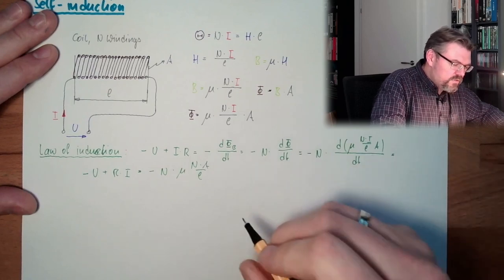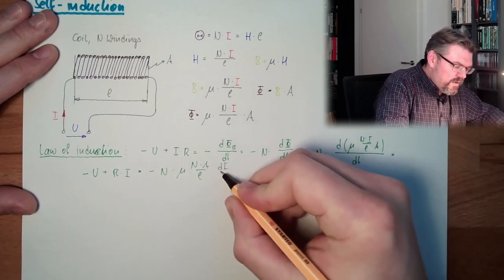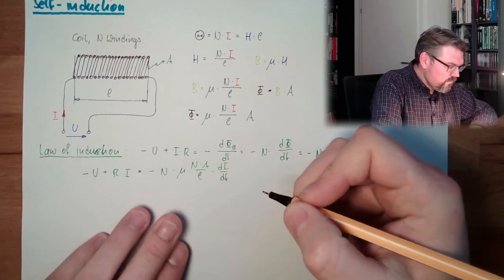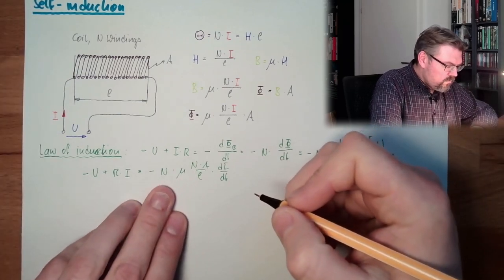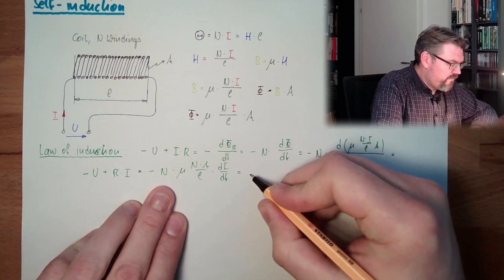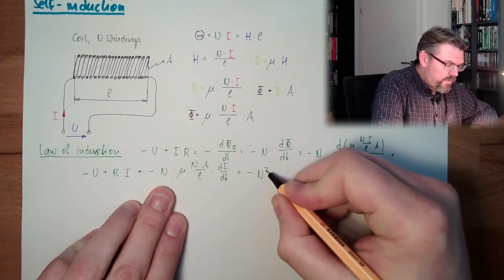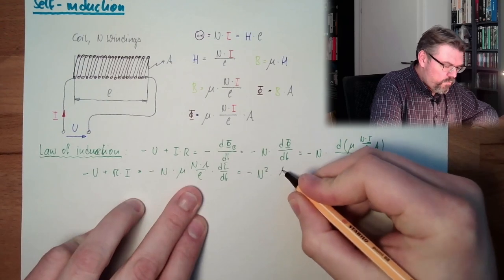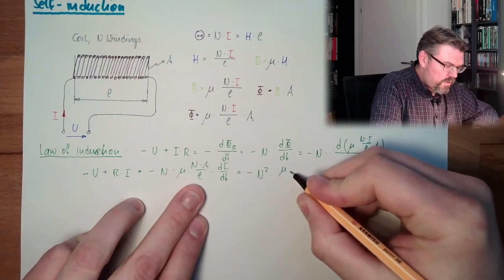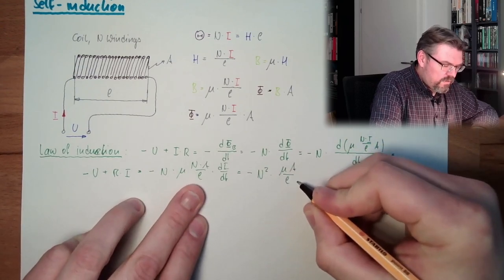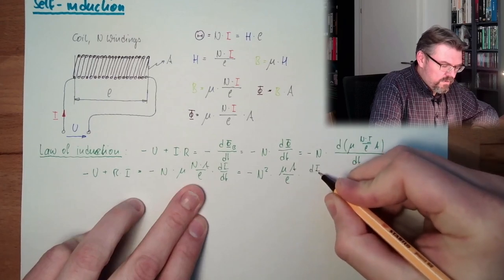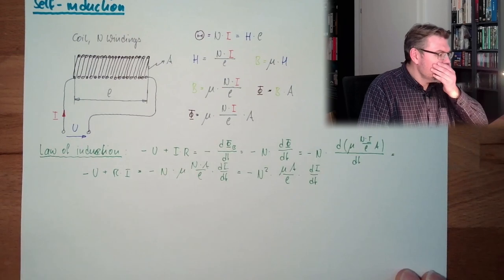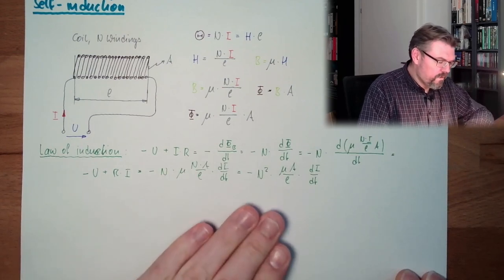So, I can write it like that, that we say, minus U plus R times I, just simply change this, is minus N multiplied. And now, everything, let's get everything before the change rate. So, it's μ, it's N, it's A, it's L. I is still inside, dI/dT. So, we have here, minus N squared multiplied by μ, A over L, dI/dT.